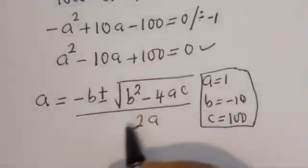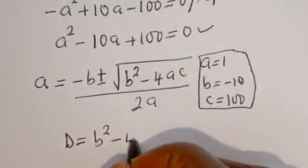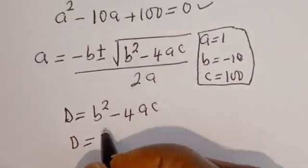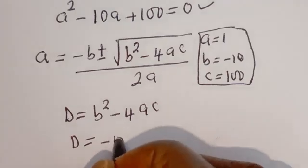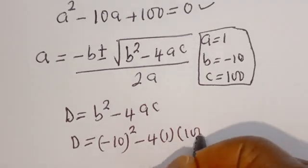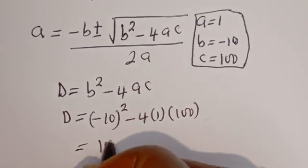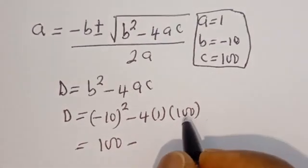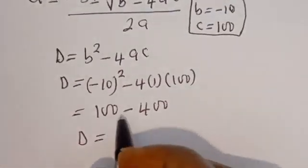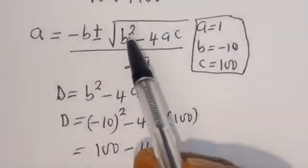Let's first consider the discriminant: d equals b squared minus 4ac. So d equals negative 10 squared minus 4 multiplied by 1 multiplied by 100. That is 100 minus 400, which gives d equals negative 300.